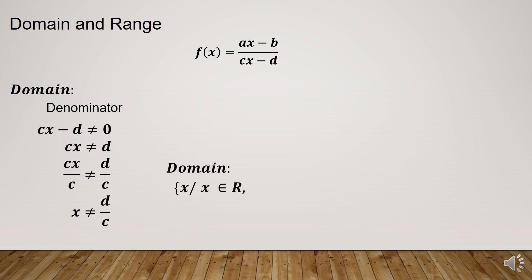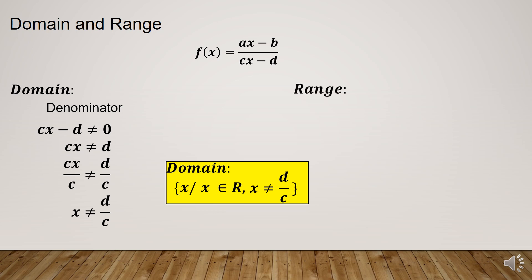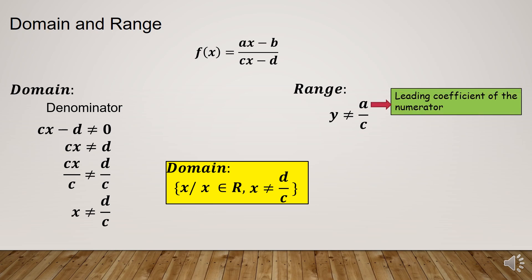So the domain is the set of x such that x is an element of the real numbers, but x must not be equal to d over c. The range restriction is that y must not be equal to a over c, where a is the leading coefficient of the numerator and c is the leading coefficient of the denominator.